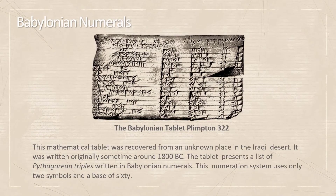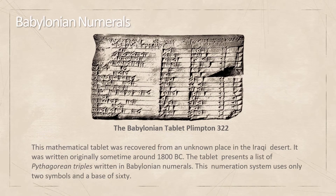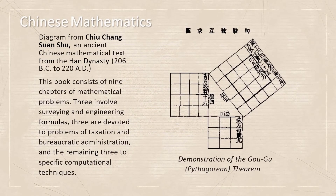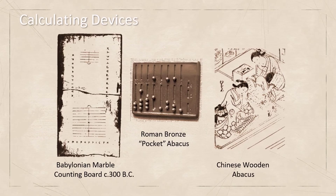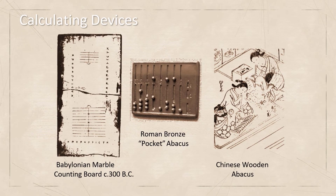This is a mathematical tablet recovered from an unknown place in the Iraqi desert. This tablet is from the period around 1800 BC, with Pythagorean triples written in Babylonian numerals. This is also a diagram from a Chinese mathematical text from the Han dynasty showing the Pythagorean theorem. These are calculating devices: a Babylonian marbles counting board, a Roman bronze pocket Abacus, and a Chinese wooden Abacus.